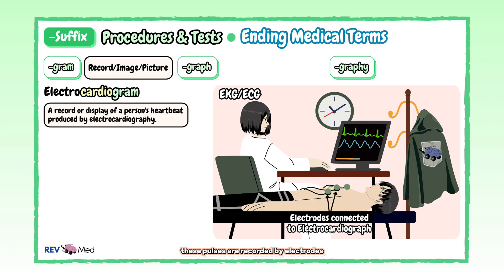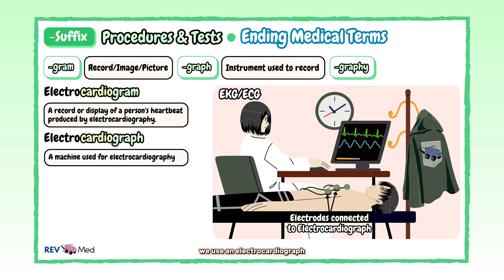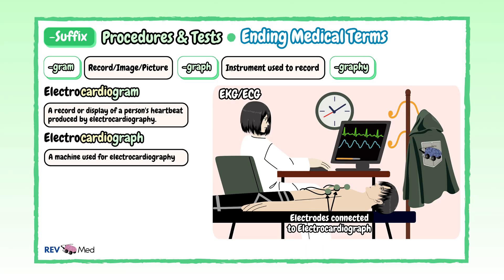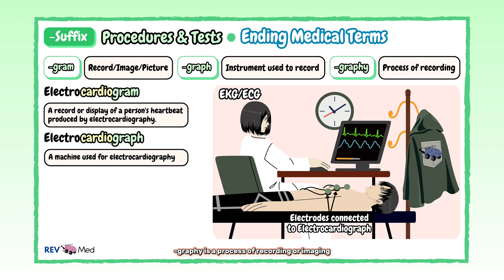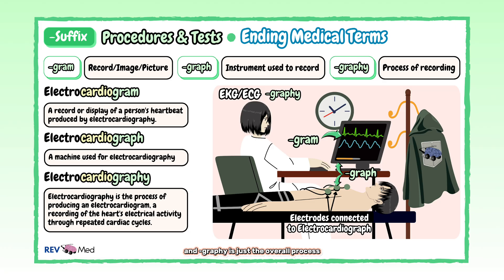These pulses are recorded by electrodes that stick to your chest and send signals to a machine. This machine is our next suffix — "-graph" — which is an instrument used to record or take a picture. So we use an electrocardiograph to record the activity of the heart, producing the electrocardiogram, which shows recorded wavy lines with a series of spikes. "-Graphy" is the process of recording or imaging. Therefore: gram is the image, graph is the machine or instrument used to take the image, and graphy is the overall process.